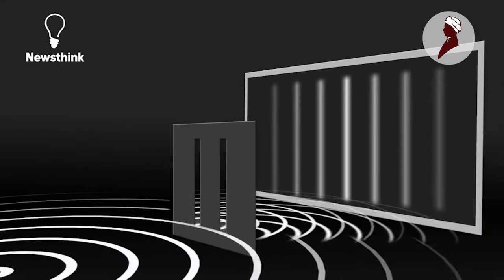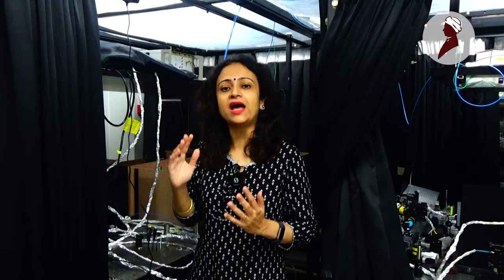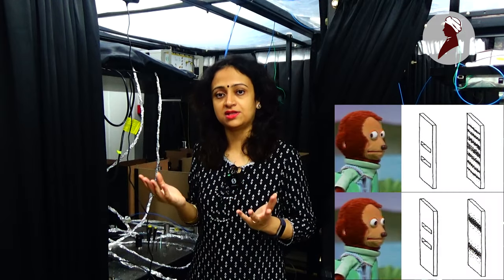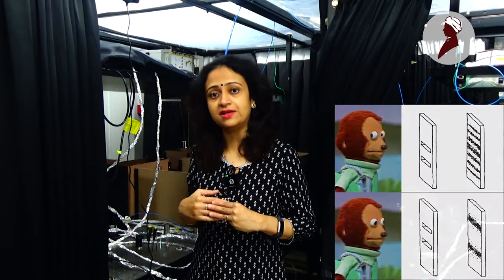However, if you do not know anything about the slit that the photon took, then you will see the interference pattern. So you don't see the particle and wave nature manifest itself simultaneously. This is called Bohr's complementarity principle.